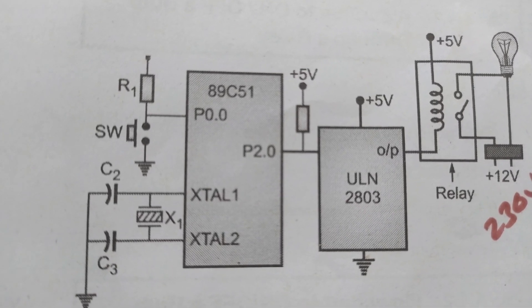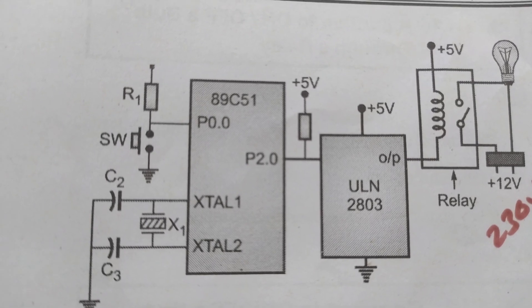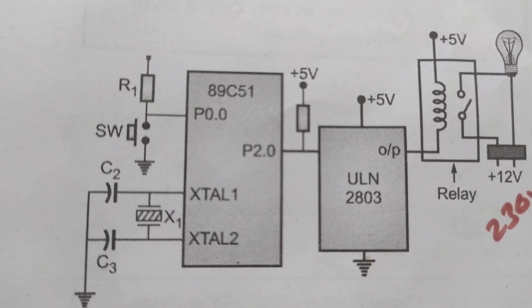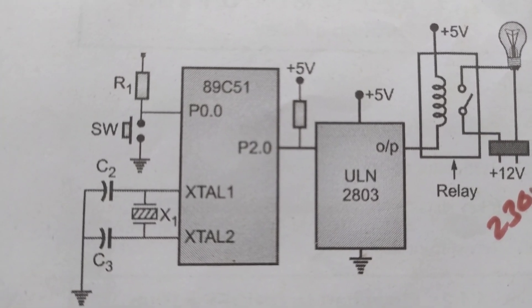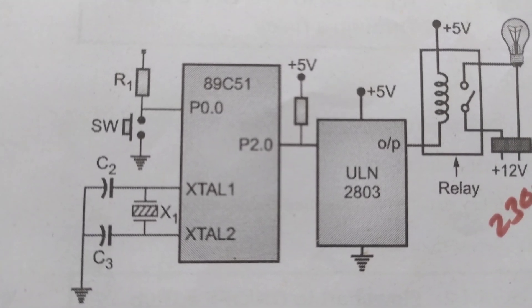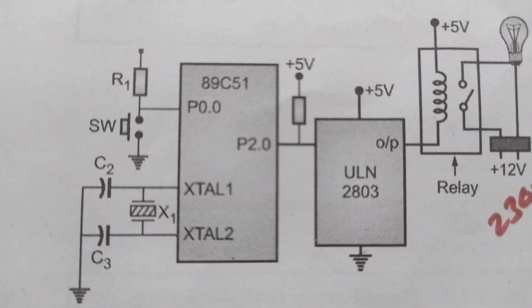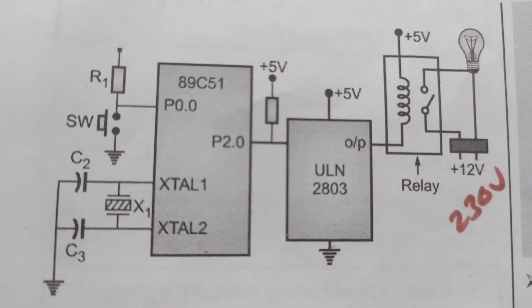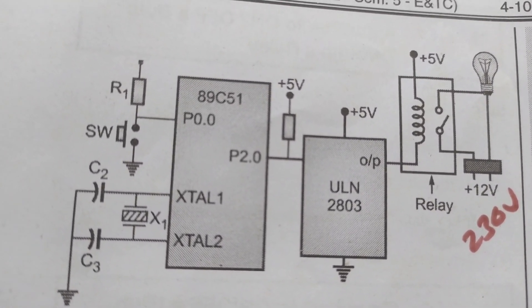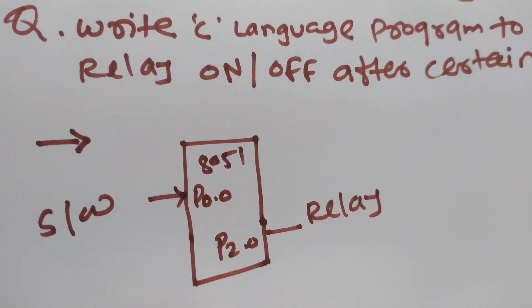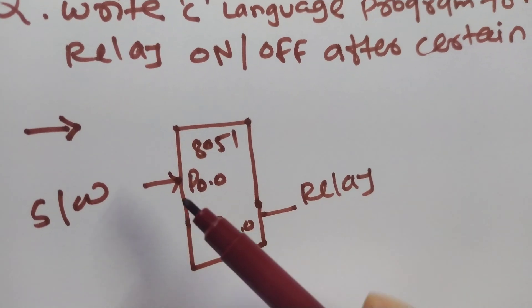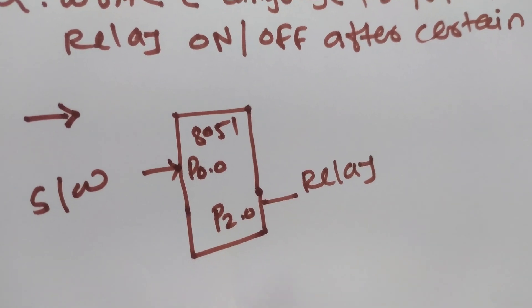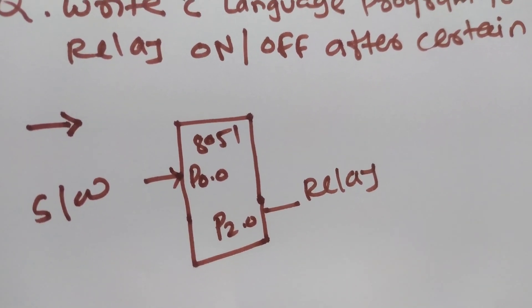Pin P0.0 has the switch connected to it. P0.0 is assigned as an input pin and pin P2.0 is assigned as an output pin. So only two pins are required for interfacing the relay. In the circuit, P0.0 is connected to the switch and pin P2.0 is connected to the relay, which is enough for developing the program for this interface.